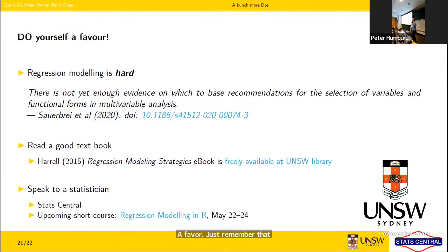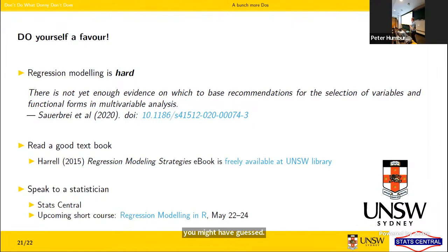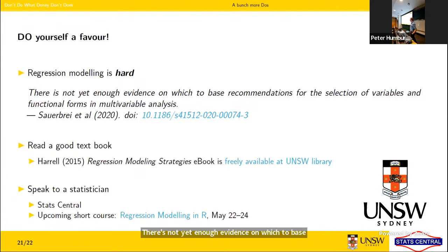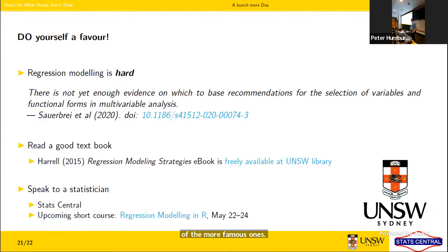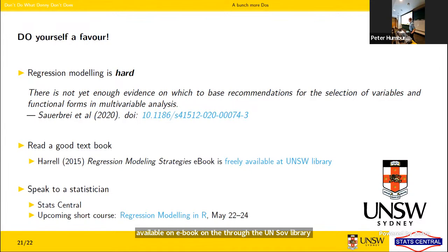Do yourself a favour and remember that regression modelling is hard — this is not something I can cover fully in a half-hour talk. As a quote from a paper by leading statisticians states, there's not yet enough evidence on which to base recommendations for the selection of variables and functional forms in multivariable analysis. Read a good textbook — Frank Harrell's Regression Modeling Strategies is one of the more famous ones, available as an ebook through the UNSW library. And speak to a statistician: StatCentral can help, and we have an upcoming short course on regression modelling next month.